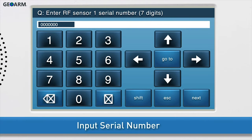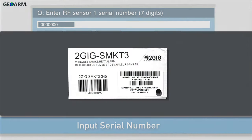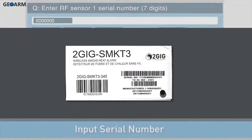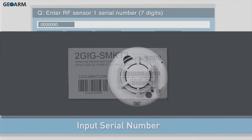Next, input the serial number for the smoke, heat, and freeze detector. You will find the serial number on the detector's box labeled as a TXID number. The number is also shown on a sticker on the detector itself.